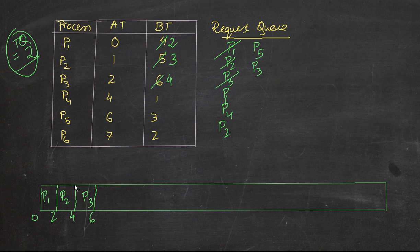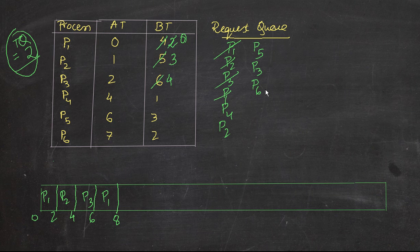Now next we execute P1 again, which has 2 seconds left, and P1 will be fully completed now — from 6 to 8, remaining time becomes 0. P1 is over, so we don't need to queue it again. And within 8 seconds, we have P6 arriving in the CPU, so we queue P6. We don't have to put P1 again because P1 is fully completed.